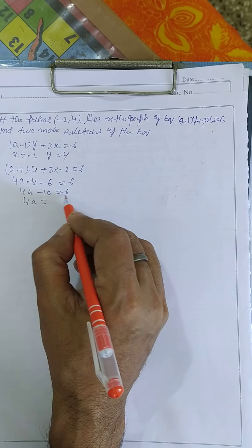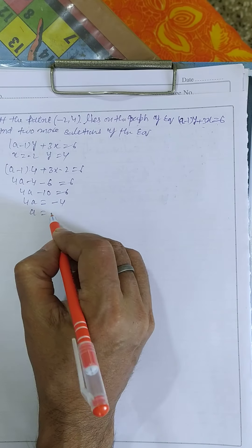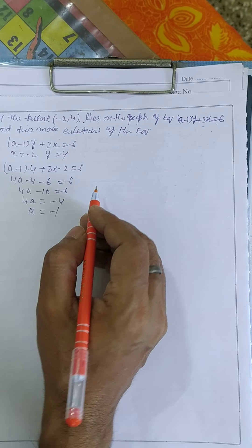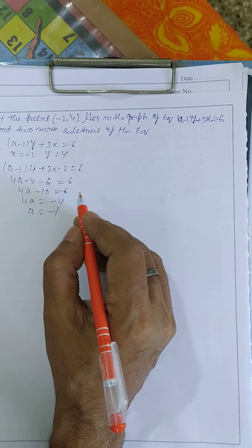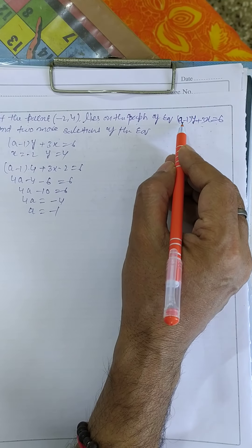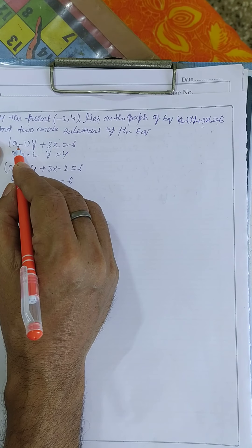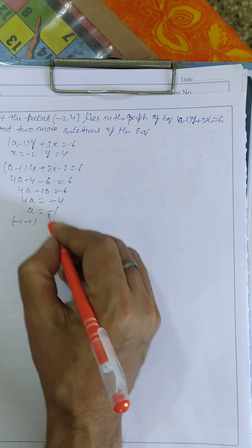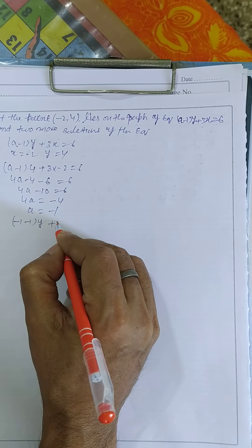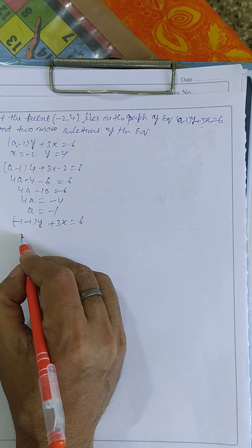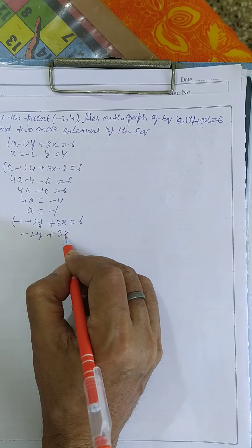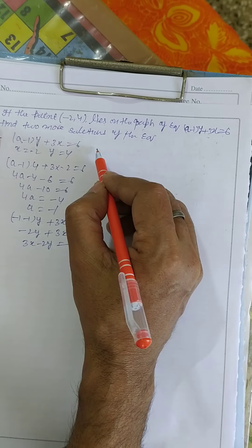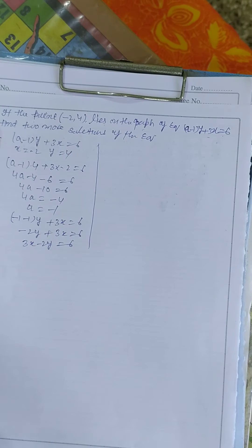So a is equal to -1 (minus one). Now putting the value of a into the equation: a minus 1 becomes -1 minus 1 = -2, so the equation becomes -2y + 3x = 6, or 3x - 2y = 6.